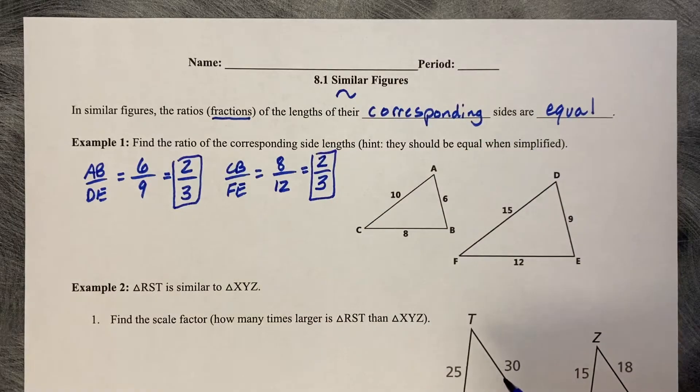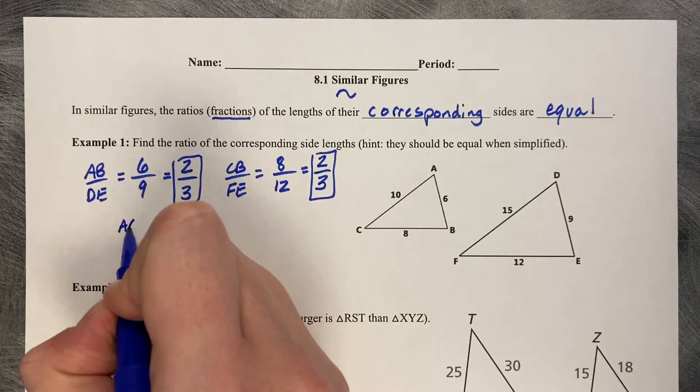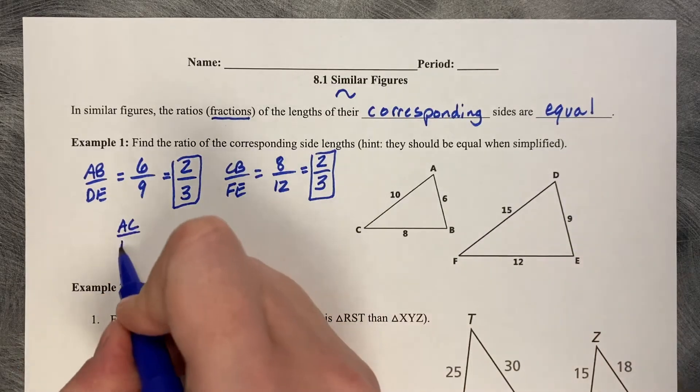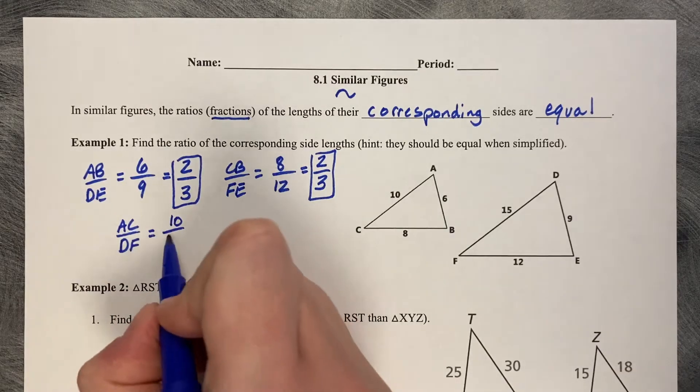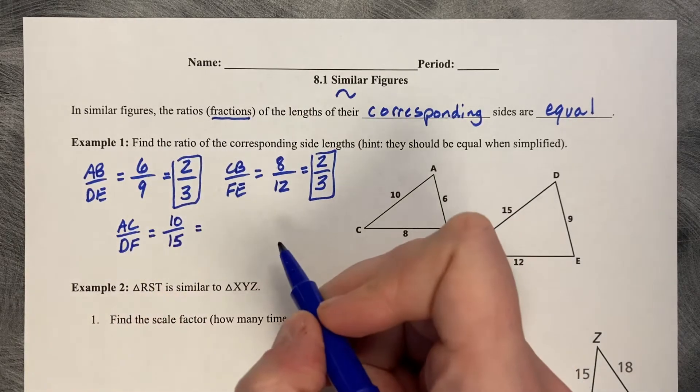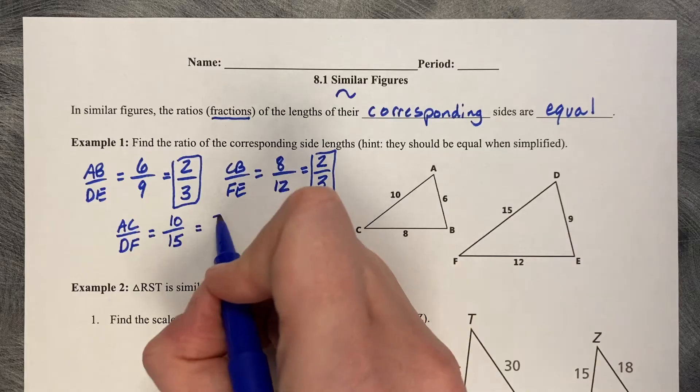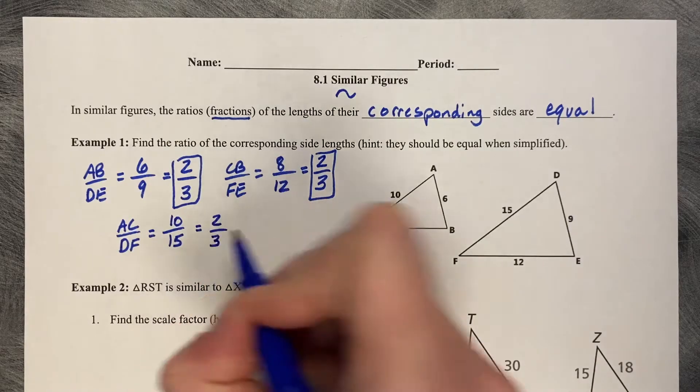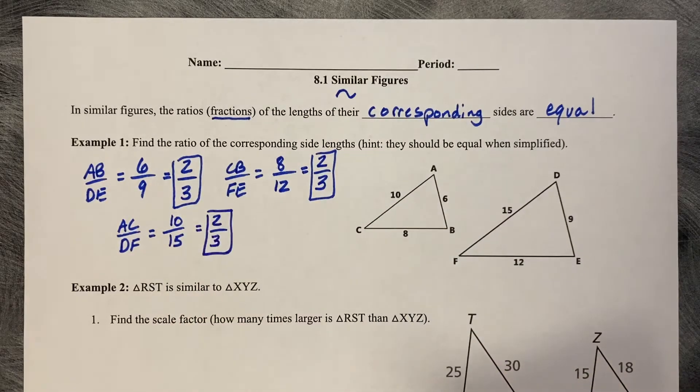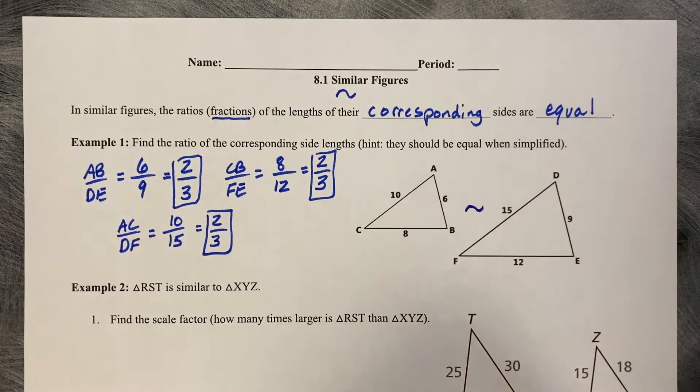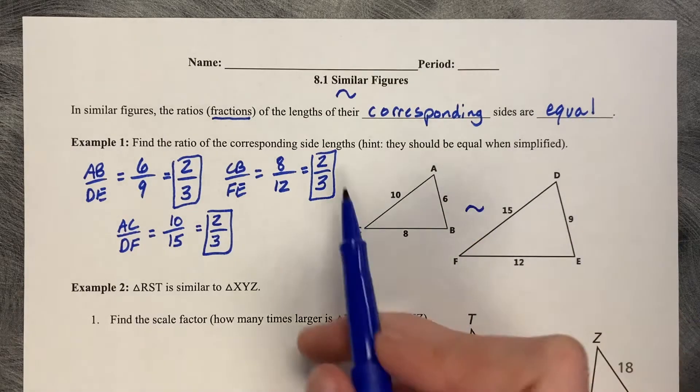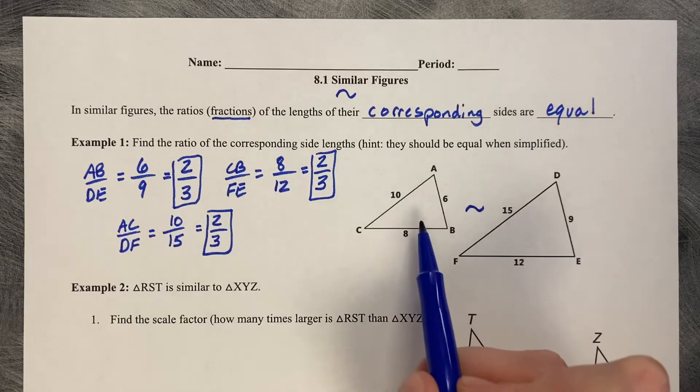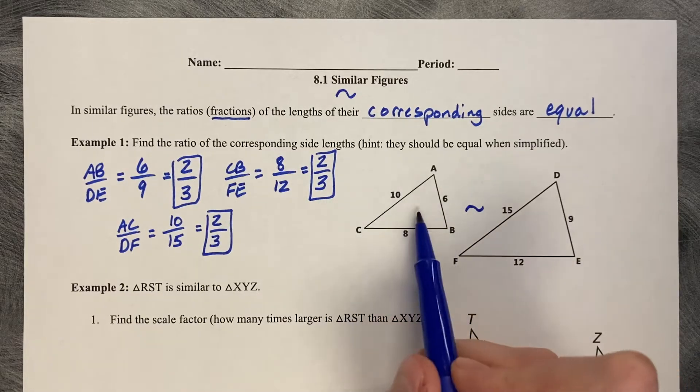Now we just need to check the third side. Let's do AC compared to DF. AC is 10, DF is 15. Both divide by 5. 10 divided by 5 is 2, 15 divided by 5 is 3. Oh good! So the question is, are they similar? Yes, these two figures are similar. The larger one has been reduced by 2 thirds to get to the smaller one.